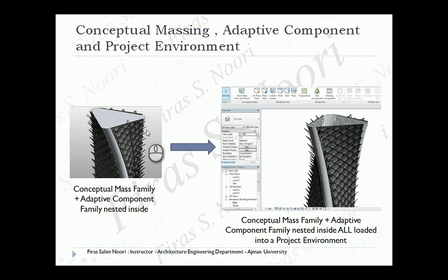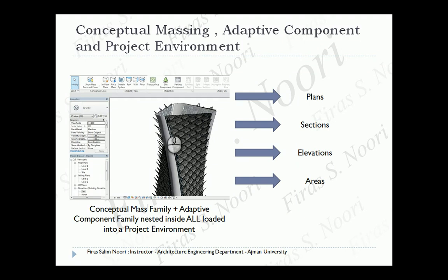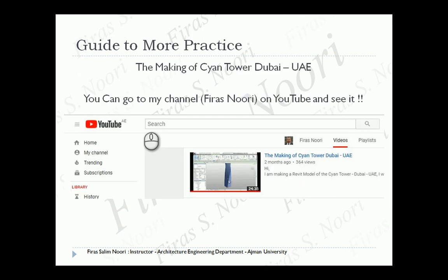This geometry as a conceptual mass can be sent to the project environment, where you can get all types of plans, sections, elevations, areas, and more. The point of this lecture is just to introduce you to the concept of the adaptive component, and then show you the procedure to create it — the division and pattern, the conceptual massing, applying it, and sending that entire project into a project environment to slice it and get plans and sections.